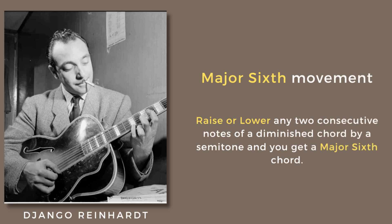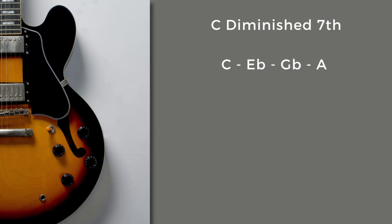Here's the concept: raise or lower any two consecutive notes of a diminished seventh chord and you'll have a major sixth chord. So there you have it — the diminished seventh chord strikes again. It's always full of surprises. I'll walk you through the process step by step, because it's not as easy to see when you're just looking at a guitar fretboard.